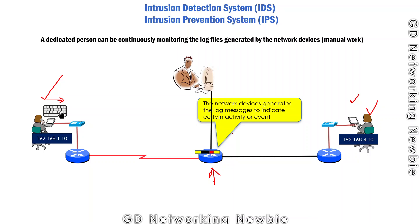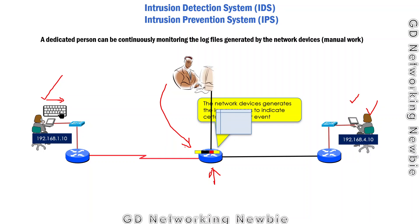Based on those log files, the network administrator can implement access control lists or firewalls to protect the network. However, this is just to illustrate that log files are generated on the router and sent to the network administrator for further analysis of any potential threat — but this will be manual work, requiring a dedicated person to continuously monitor these potential threats.